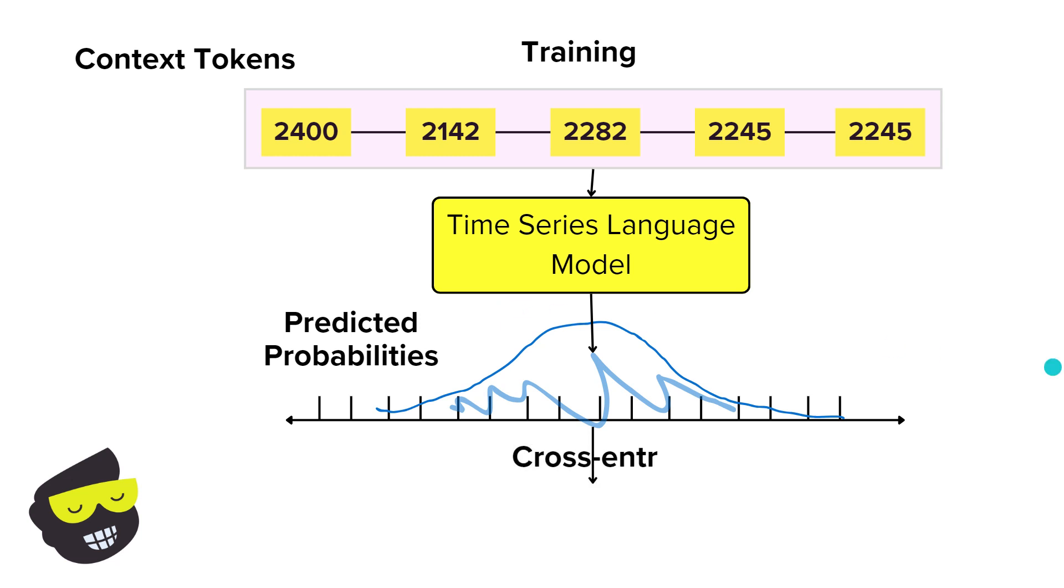As well, we have cross entropy. This is a loss function used to measure the difference between the predicted probabilities and the actual next token in the sequence. It quantifies how well the predicted probability distribution aligns with the actual token distribution. The goal here is that we need to minimize this loss during training. If you've ever done any kind of neural networks training either with PyTorch or TensorFlow, this is what you would do.